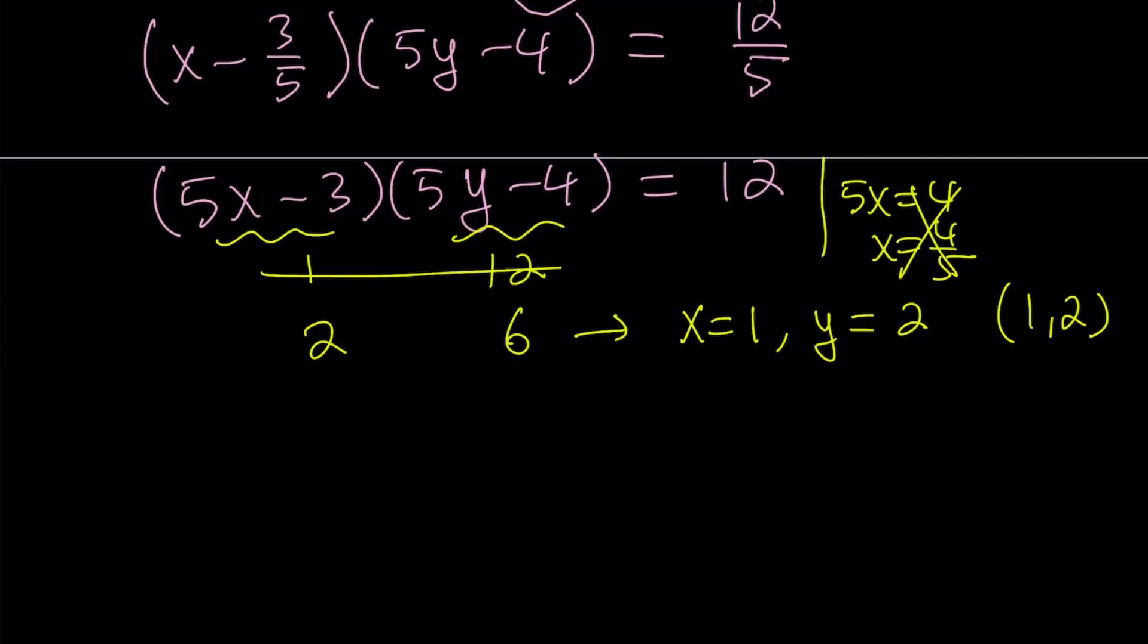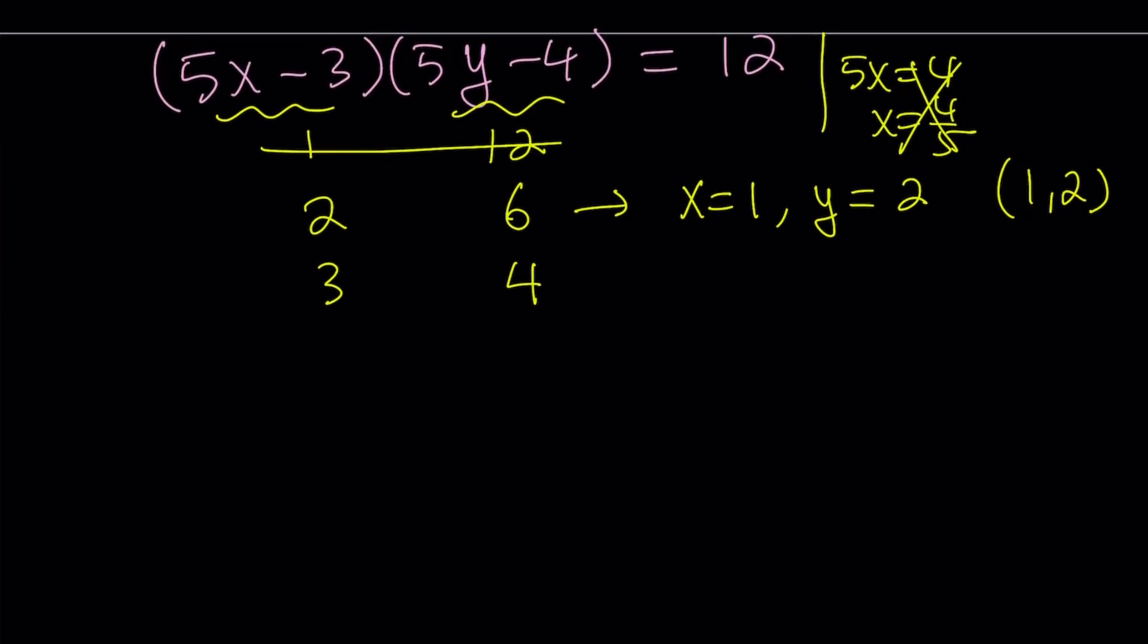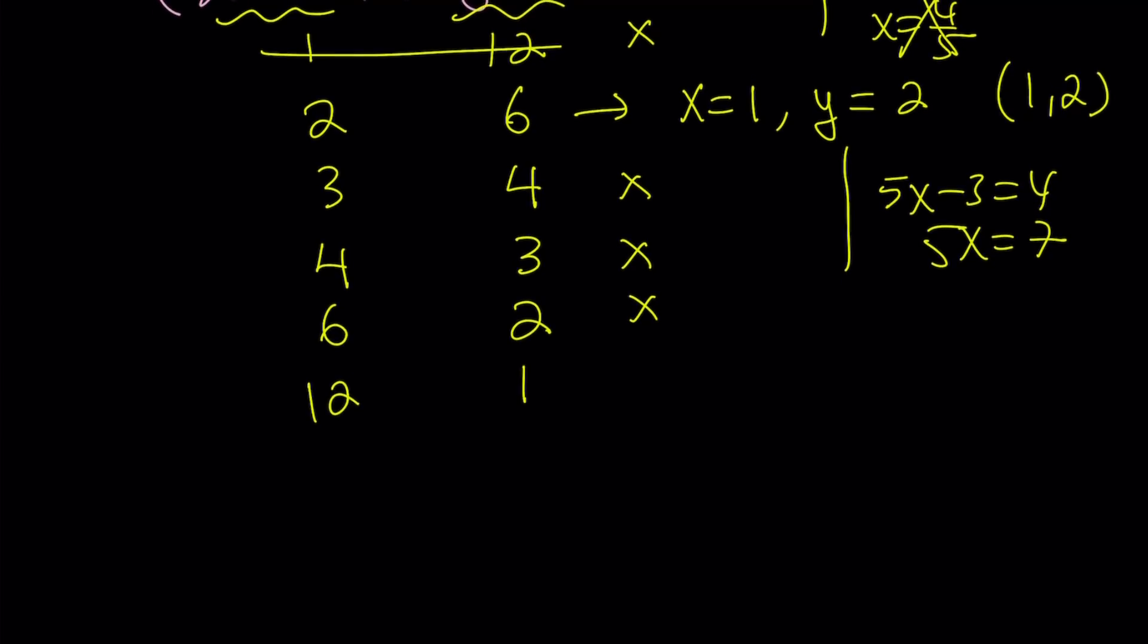Let's continue doing this and then see if there's any other solutions. I'm going to go with 3 and 4, but 5x minus 3 equals 3 gives me 5x equals 6. x is not going to be an integer. So, I'm just going to put an x there, which means we don't get any integers. 4 and 3 is not going to give me any integers either because 5x minus 3 equals 4. 5x equals 7. How about 6 and 2? That's not going to work. Notice you can do this mentally. 5x equals 9. That's no good. How about the 12 and 1, which is the last pair for our positives? And that's going to give us 15 and 5. That's good. This means that x equals 3 and y equals 1. So, 3, 1 is another solution.